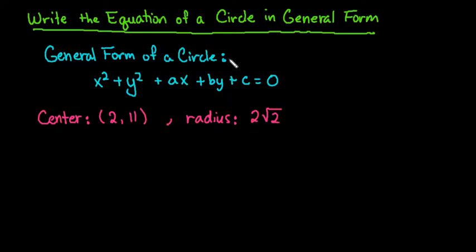The general form of a circle is x squared plus y squared plus ax plus by plus c, where a, b, and c are all real numbers.